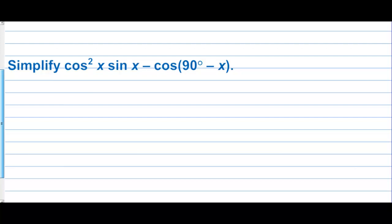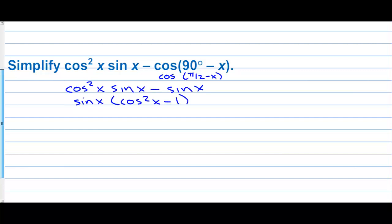Simplify cosine squared sine x minus cosine of 90 degrees minus x. Well, cosine of 90 degrees minus x is the same as cosine of pi over two minus x, and that equals sine. So we can write this as cosine squared sine minus sine of x. Factor out a sine: sine x times cosine squared minus one. That's backwards, so this equals sine of x times negative sine squared x, which gives negative sine to the third x.